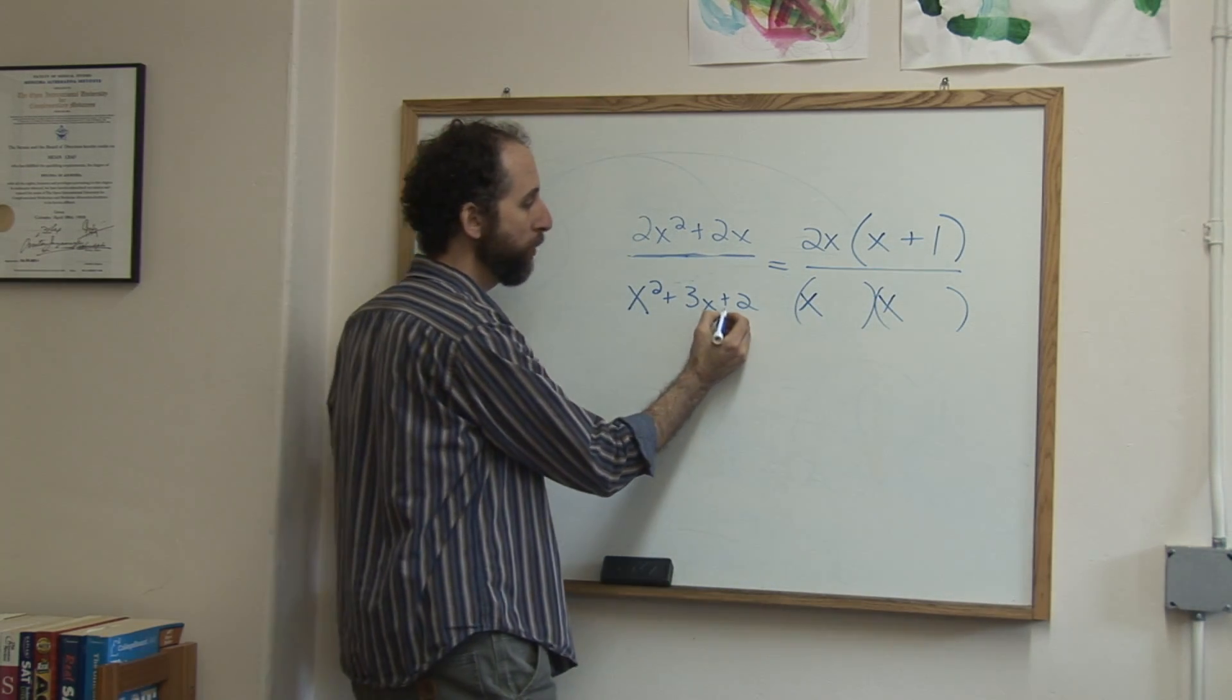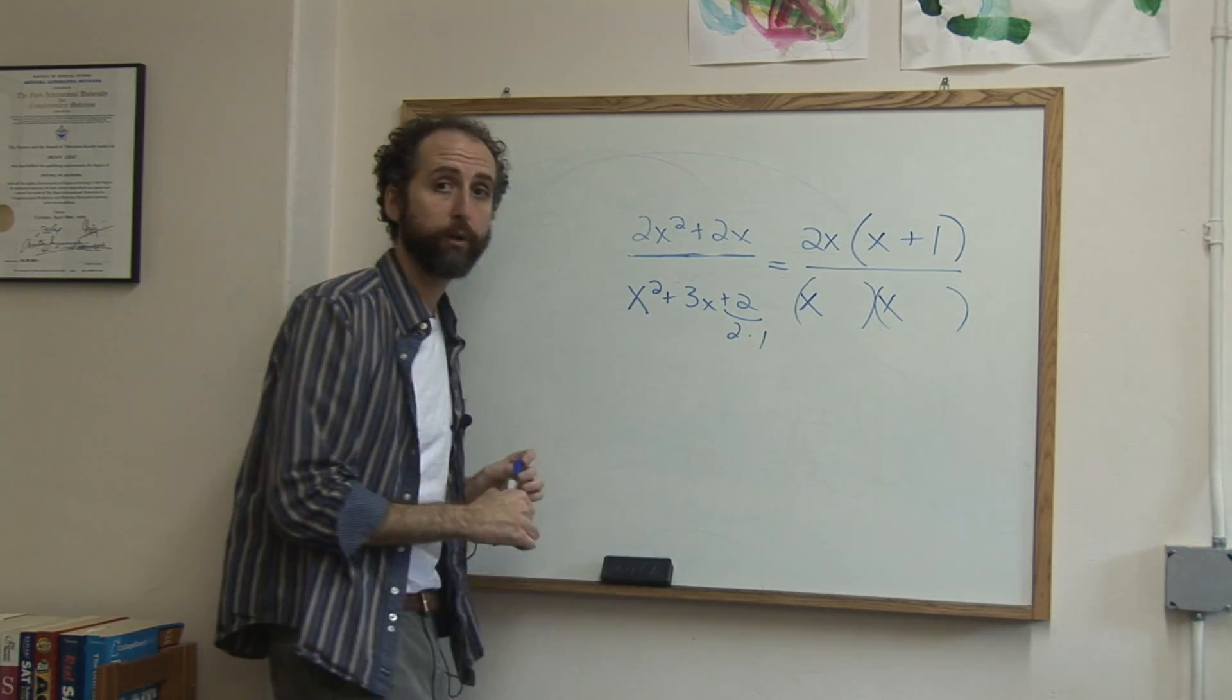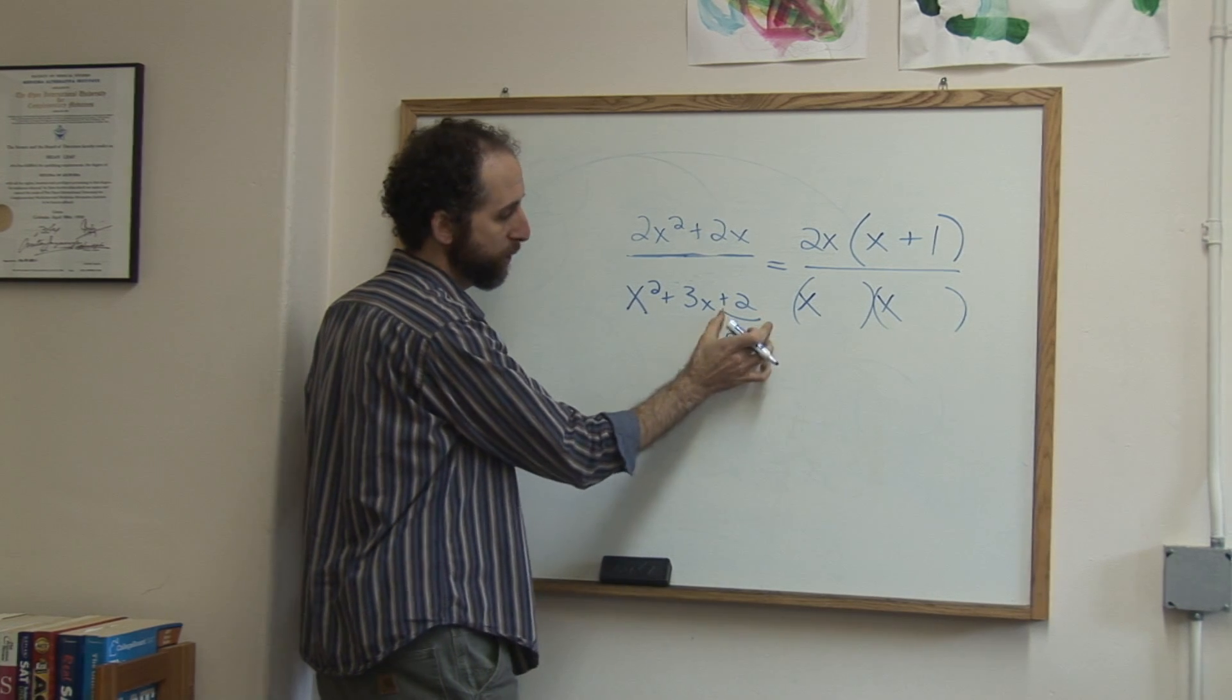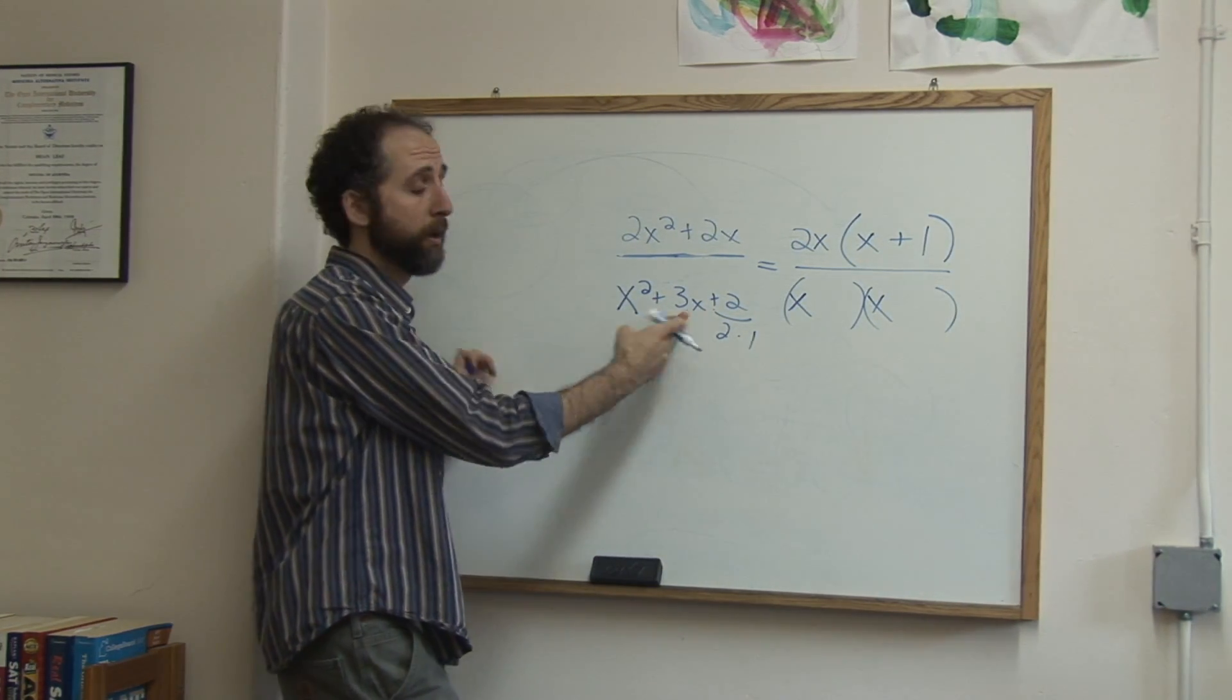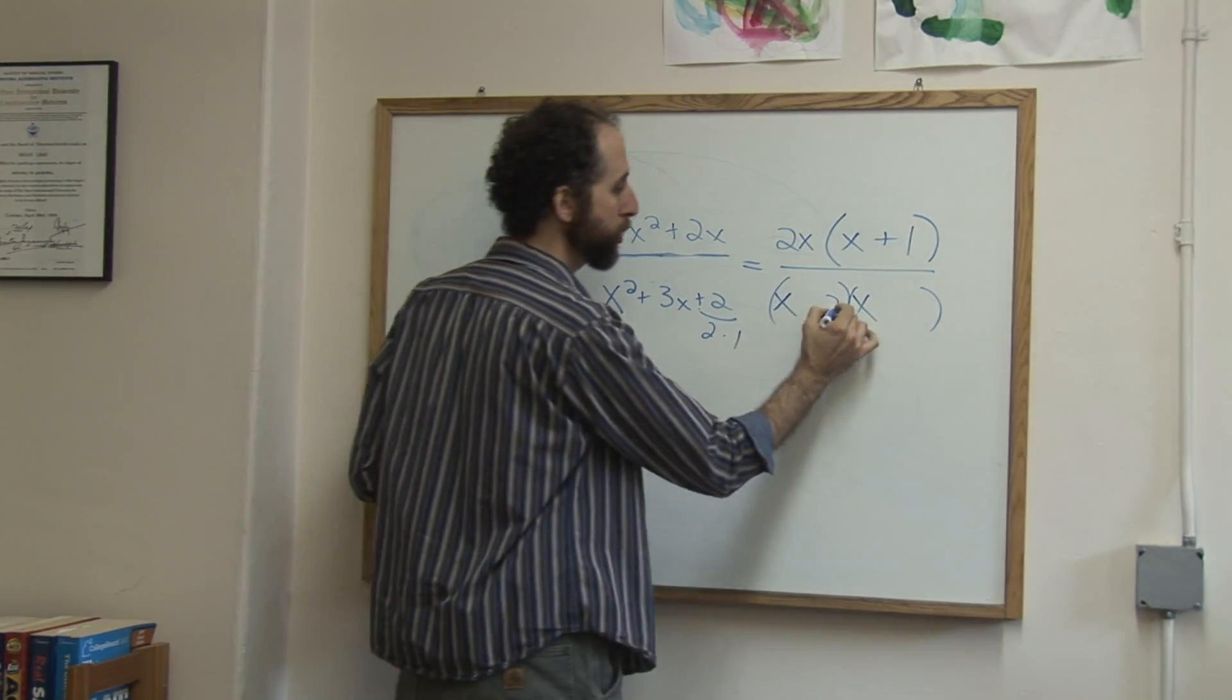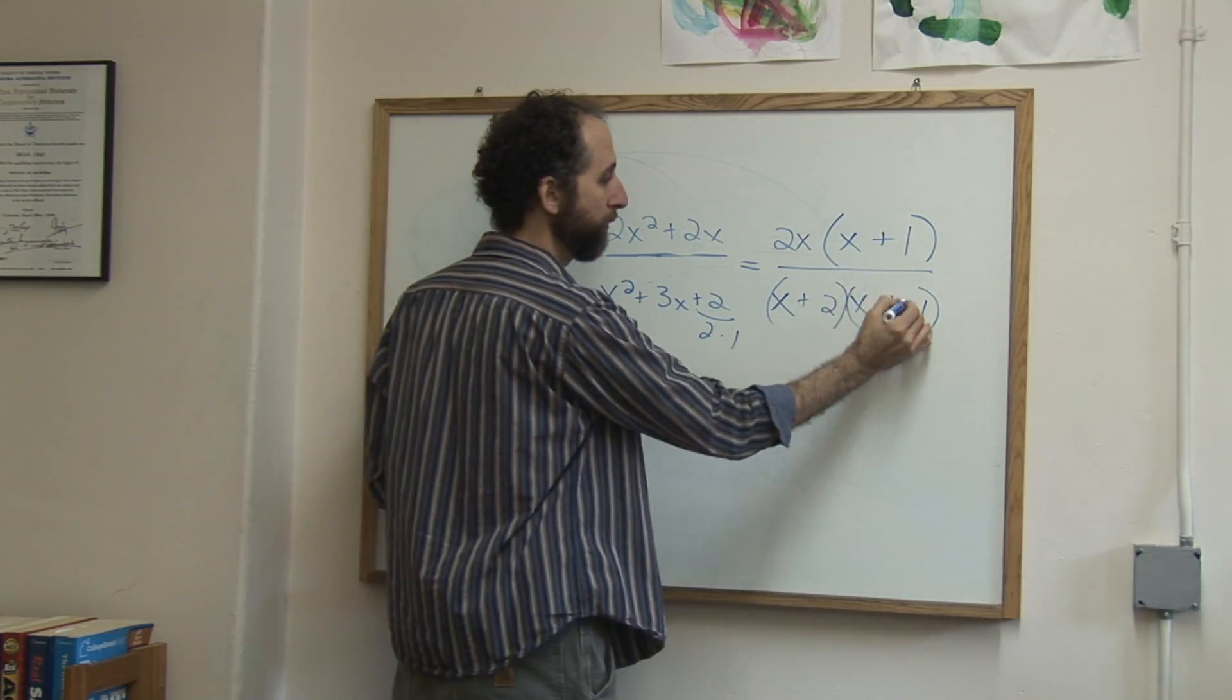Now you're going to ask yourself, what multiplies to be 2? It's 2 and 1, there's really no other choice. And you want to know, let's say you had more than one set, you'd say which of these sets add or subtract to be 3? We only had one set, it's 2 and 1. That's the only way to multiply to be 2. So there's going to be a 2 and a 1. So because these are both positive, these are both positive.